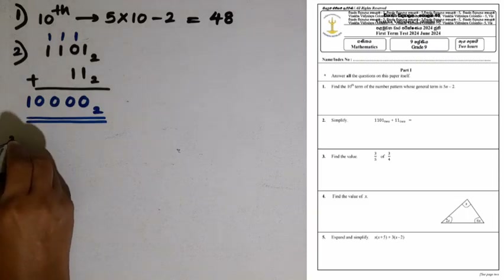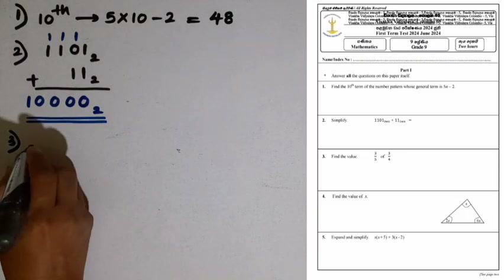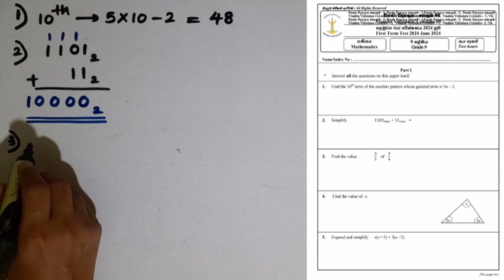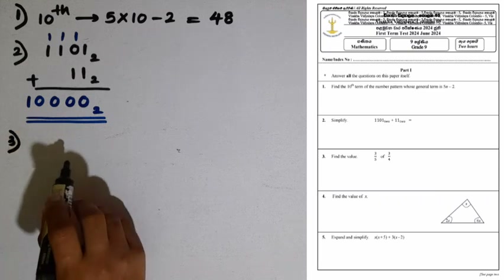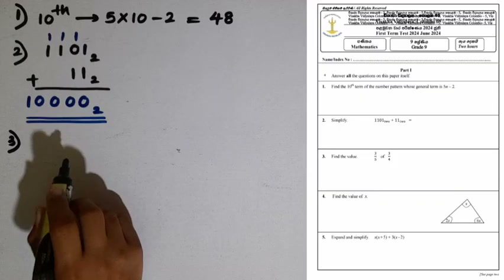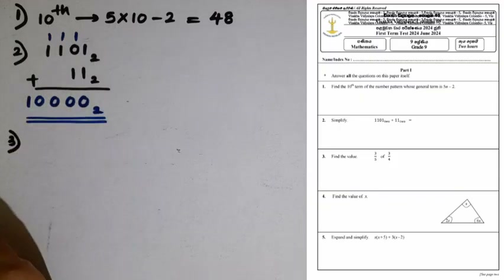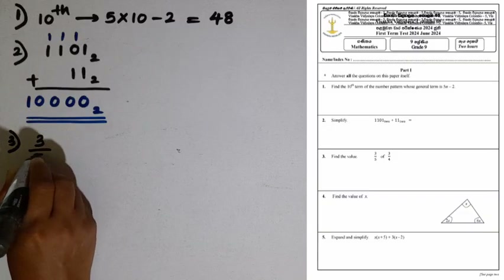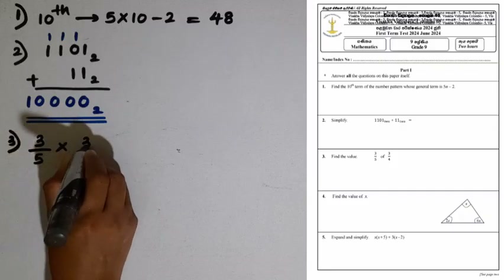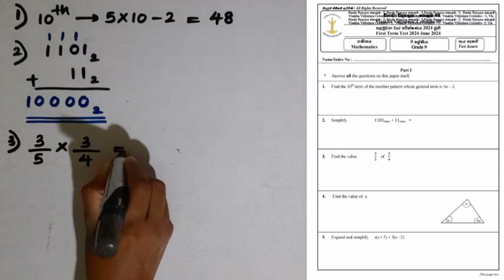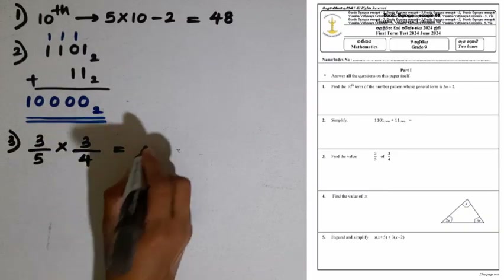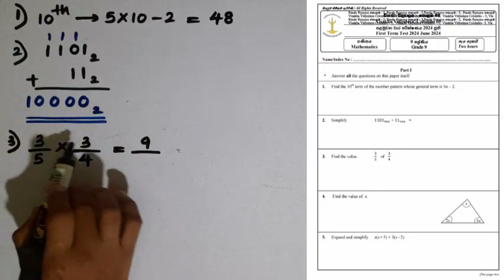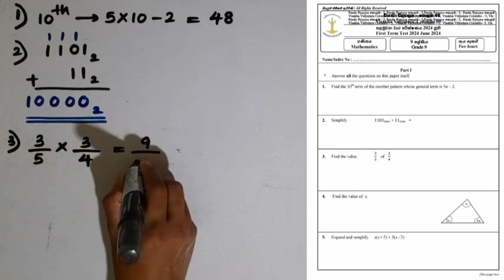Question number 3: find the value of 3 over 5 of 3 over 4. We can use the multiplication sign here: 3 over 5 multiplied by 3 over 4. There are no common factors, so we multiply the two numerators and two denominators separately. 3 times 3 is 9, and 5 times 4 is 20. The answer is 9 over 20.